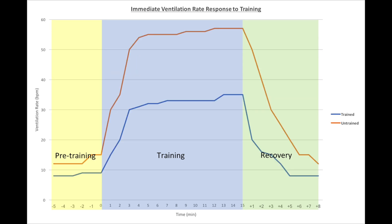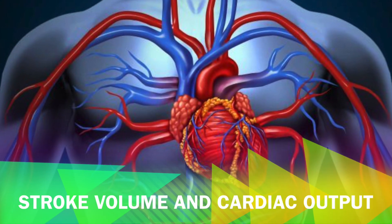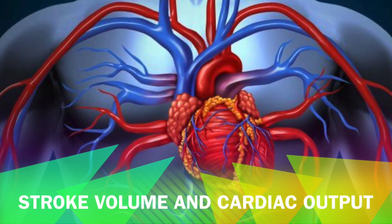Similar to changes in heart rate, ventilation rate increases at the beginning of training. The athlete's ventilation rate then increases according to intensity, with the untrained athlete requiring a higher ventilation rate than the trained athlete. After training, the trained athlete returns to normal faster than the untrained athlete.